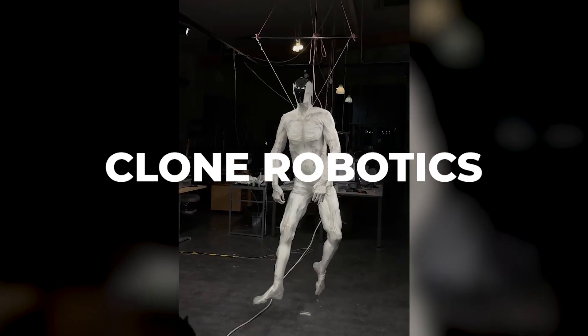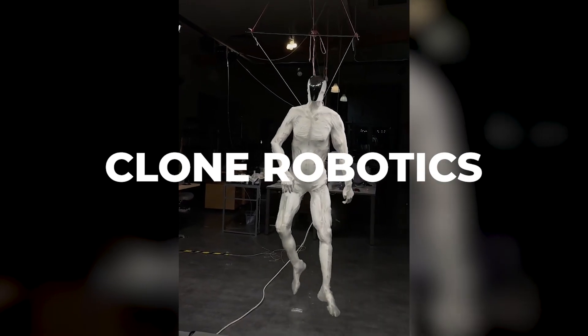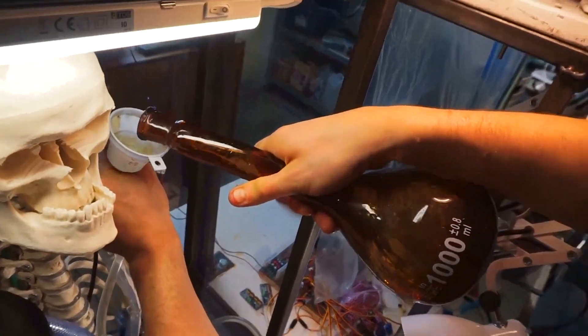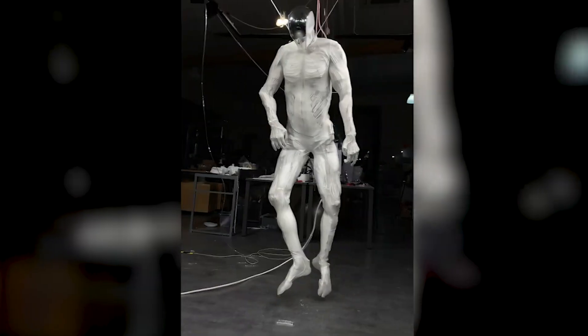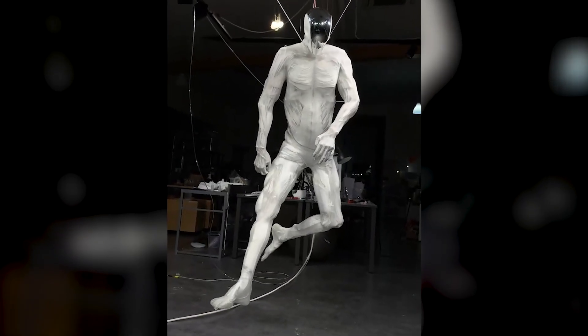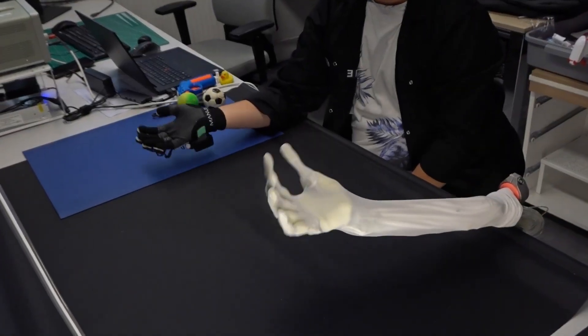Clone Robotics has just set a remarkable milestone in human history by unveiling the first-ever biomimetic system. This full-body android can reproduce human anatomy and movement with an accuracy we've never seen before.